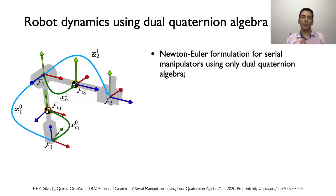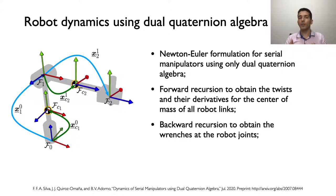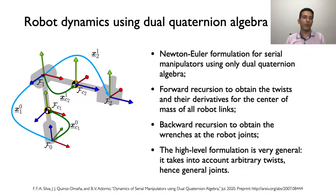We have also been working on robot dynamics within dual quaternion algebra. We have proposed a recursive Newton-Euler formulation for a serial manipulator using only dual quaternion algebra. The forward recursion is used to obtain the twists and their derivatives for the center of mass of all robot links, and the backward recursion is used to obtain the wrenches at the robot joints. This formulation is very high level thanks to dual quaternion algebra and very general — it takes into account arbitrary twists, hence arbitrary joints. We have also proposed a method based on Gauss's principle of least constraint, which can be useful to account for constraints in the robot dynamics. For the moment, we only tackled the dynamic modeling of serial manipulators.